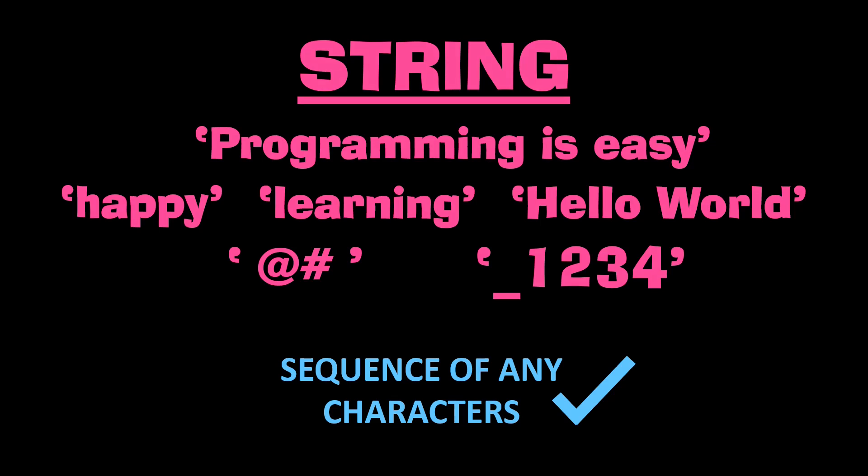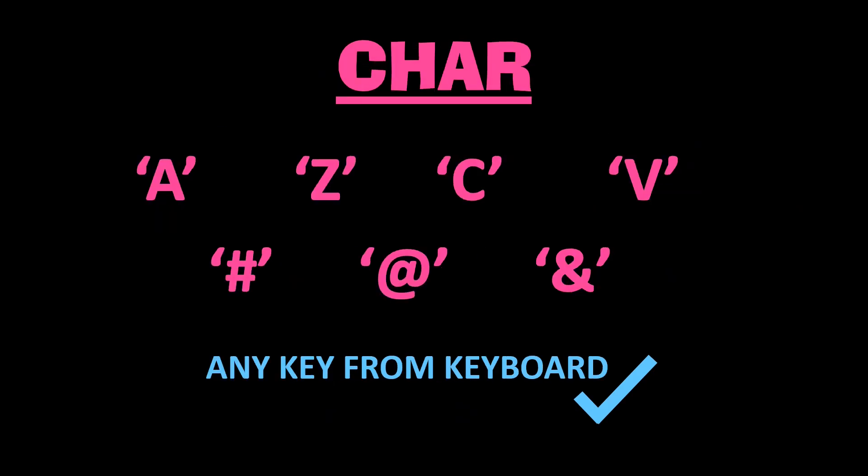String data type contains a sequence of any characters on your keyboard. In Pascal, you should give your string inside a pair of single quotation marks — only then will the computer understand you are storing a sequence of characters. You can see examples for string on screen. Char data type contains a single character, which can be any character from your keyboard.